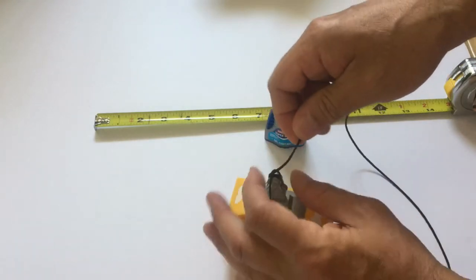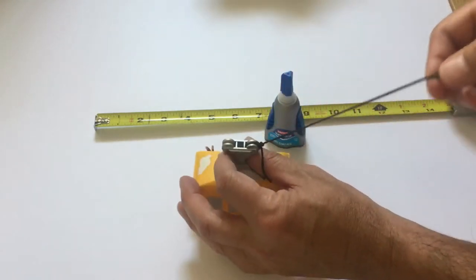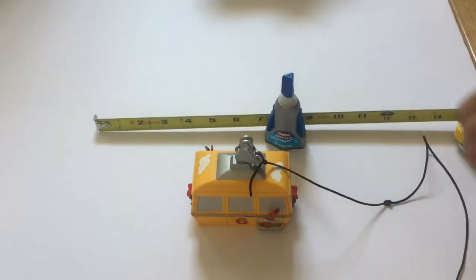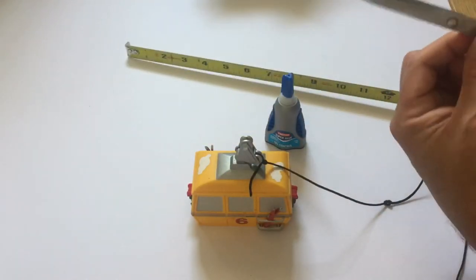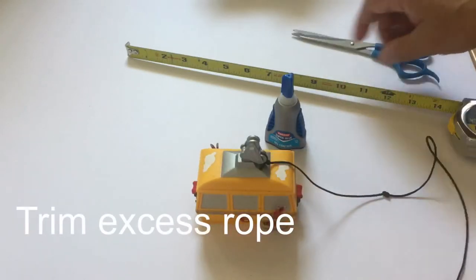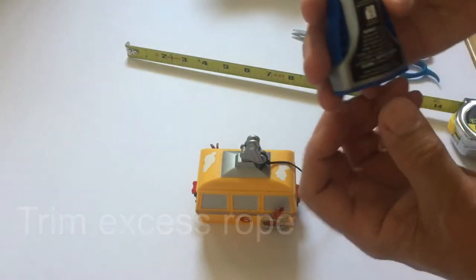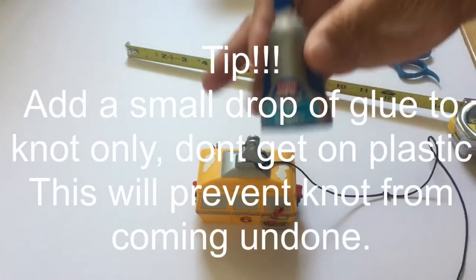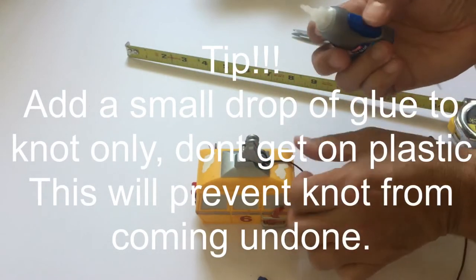Don't get it on the plastic. This will prevent the string from unraveling as the unit is running and ending up that your gondola will drop on the floor and probably break. Allow the glue to dry before operating the unit.